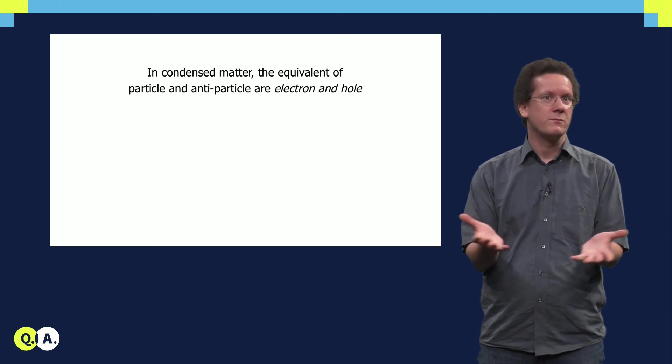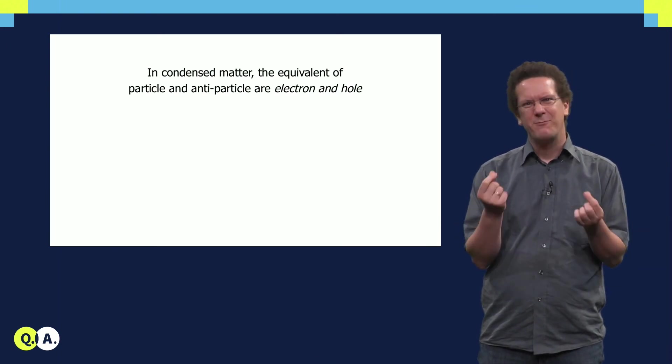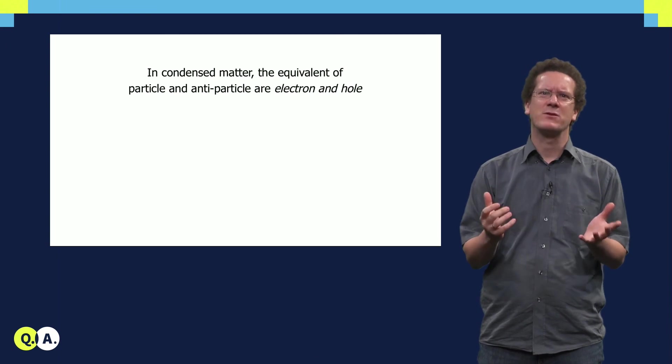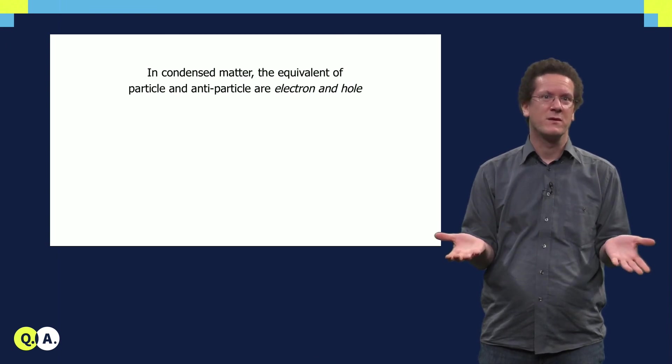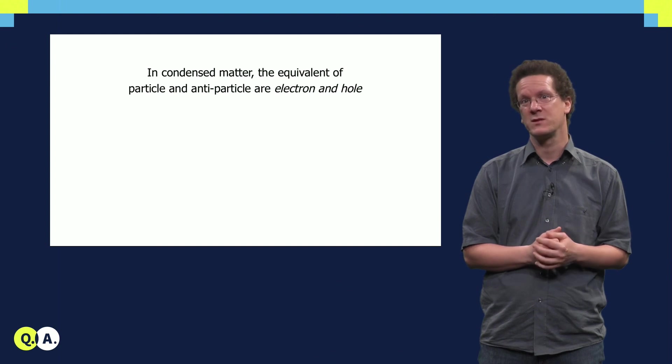A Majorana is a superposition of these two things. The problem is, however, that electron and holes have opposite charge, so it is actually usually impossible to form a superposition of them.